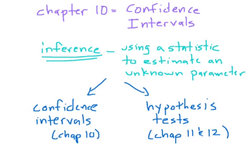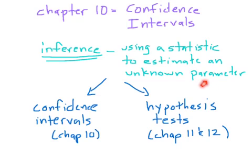This is a video for chapter 10, which is all about something called confidence intervals. This really begins our first discussion of something called inference. What we mean by inference is using a statistic — something like x-bar or p-hat — to estimate an unknown parameter, which would be something like mu or p. Parameters are actually unknown, so because we can't really know them without doing a census of the entire population, we use a statistic to estimate some unknown parameter. Inference is a big topic we'll be doing throughout the remainder of the year.